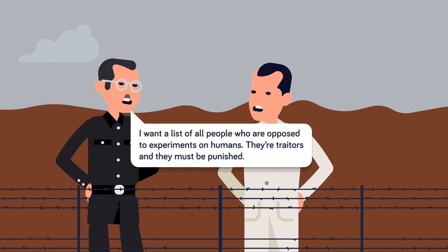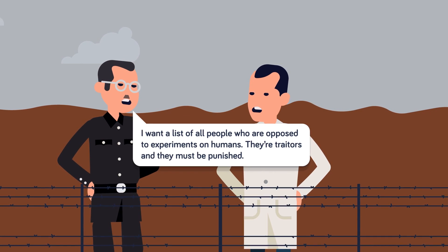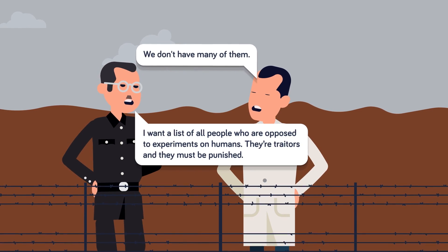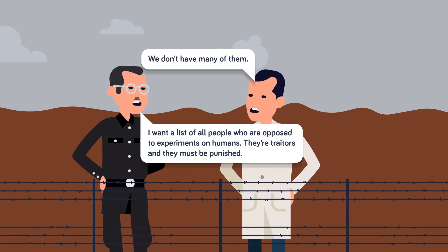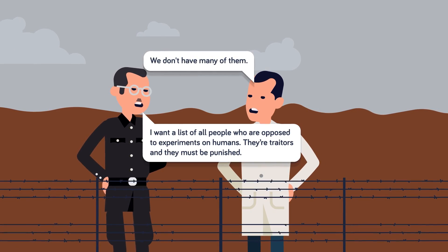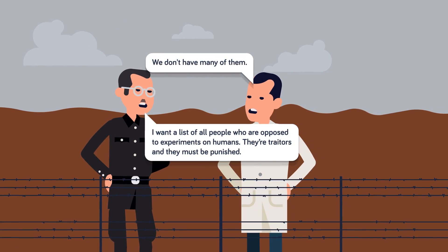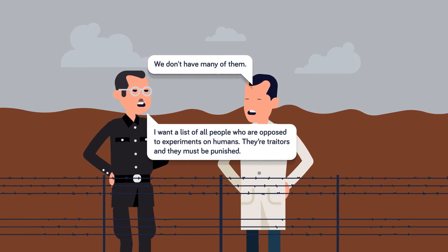In the testimony of SS officer Rudolf Brandt, he talks about Himmler stating, He further asked Rascher to submit the names of the people who were opposed to experiments on human beings, and stated that such peoples were to be considered traitors. Still, if there were such traitors, they were in a very small minority.